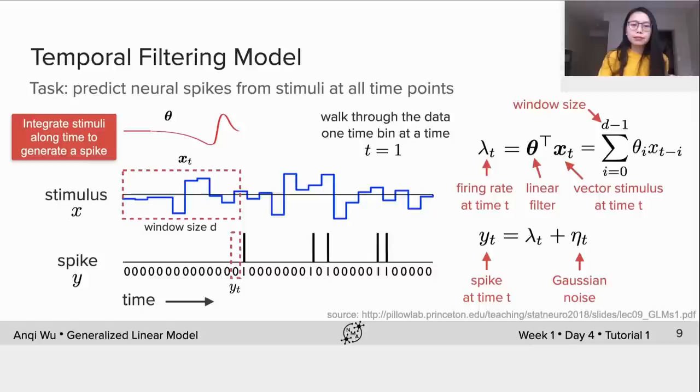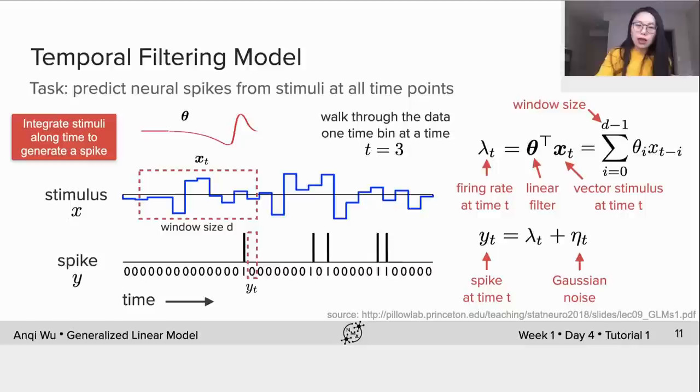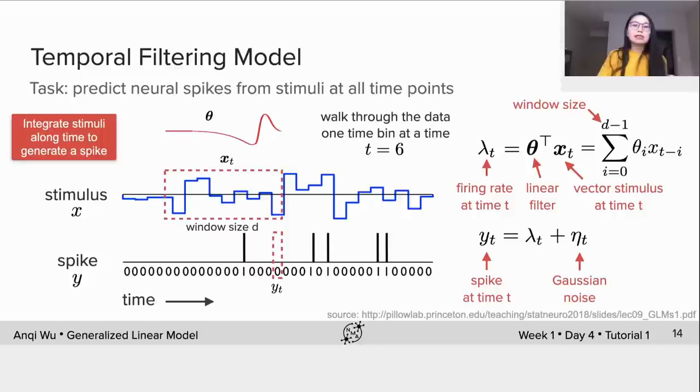We can walk through the data one time bin at a time and see how Xₜ and Yₜ change at different time points. Here we show θ, Xₜ and Yₜ when t equals 1, 2, 3, 4, 5, and 6. We can see Xₜ is the binary spike count at the end of the window, and θ is the same parameter when sliding the window.